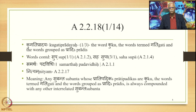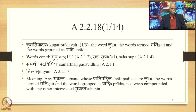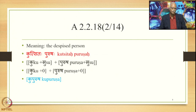The overall meaning of the sutra is: any subanta whose pratipadikas are 'ku', or the words termed 'gati', or the words grouped as pradis, is always (nityam) compounded with any other interrelated subanta. For example, to express the meaning 'the despised person', we have kutsitah purushah as the laukika vigraha.